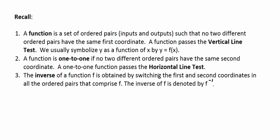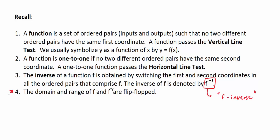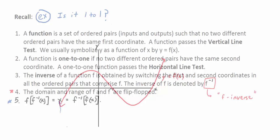Number three: the inverse of a function is obtained by switching the first and second coordinates in all the ordered pairs that comprise f. The inverse of f is denoted f⁻¹, and we read it as 'f inverse.' Number four: the domain and range of f and f inverse are flip-flopped. Number five, the most important property: if you compose them, they undo each other. f(f⁻¹(x)) = x, and also f⁻¹(f(x)) = x. They knock each other out, which is why we use inverse functions to solve equations.